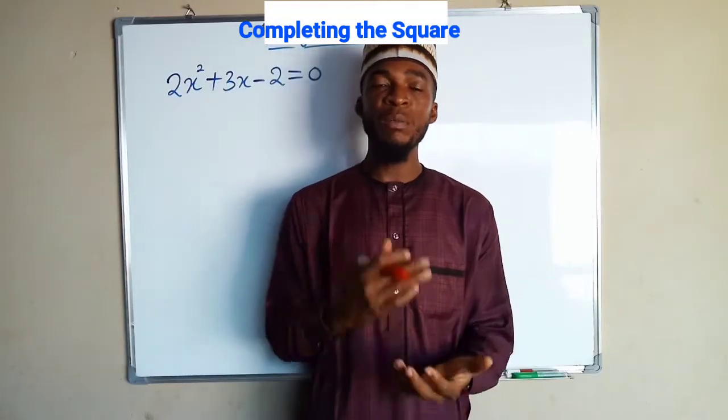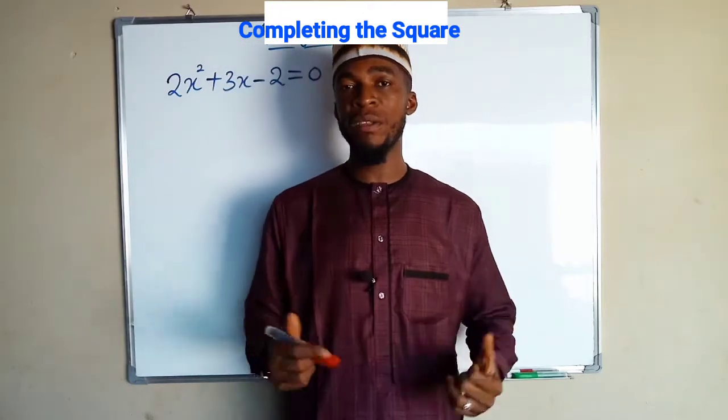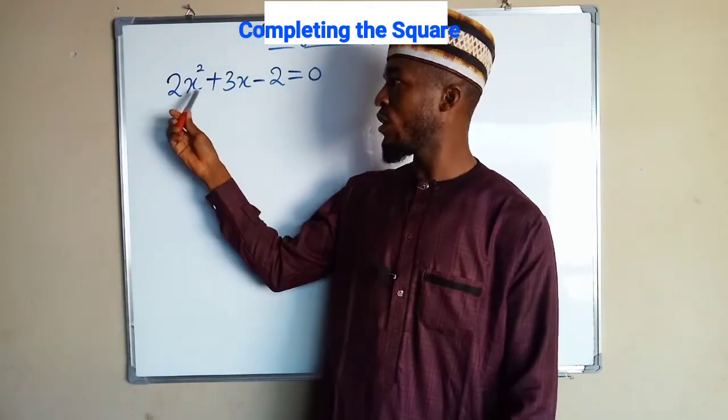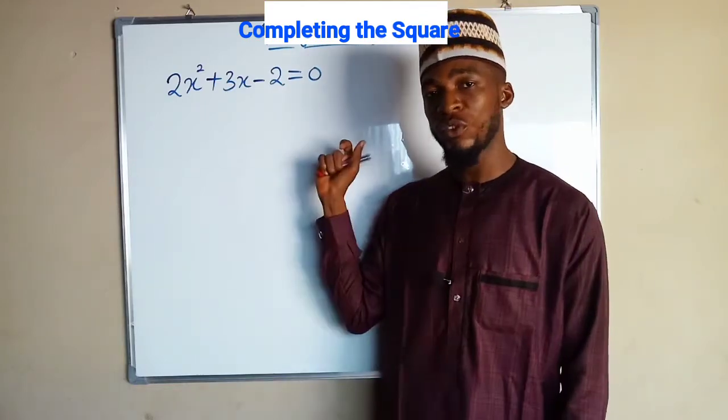Hello, good day viewers. Let me show you the step-by-step on how to solve quadratic equations by completing the square method. I have a quadratic equation here on the board, which is 2x squared plus 3x minus 2 equal to 0.